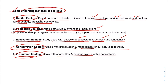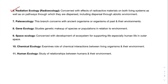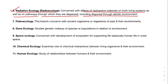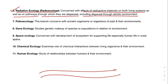These are important branches of ecology. Radiation ecology is concerned with the effects of radioactive materials on both living systems as well as on the pathways through which they are dispersed, including dispersal through the abiotic environment. For example, if radioactive material is thrown into a river, radiation ecology studies its effect on the water, the nearby soil, and the living organisms inside the water. It is also called radioecology.